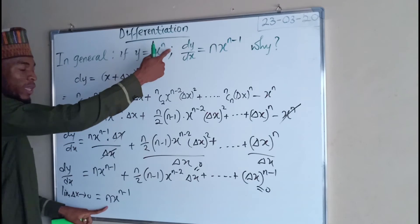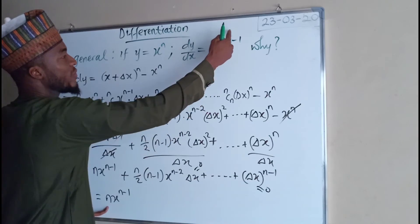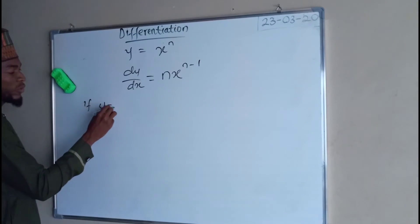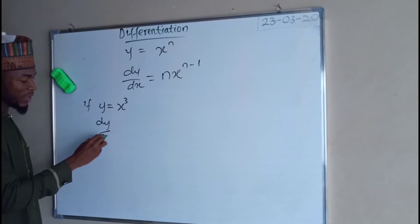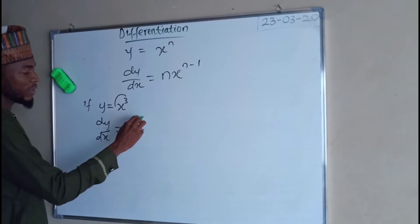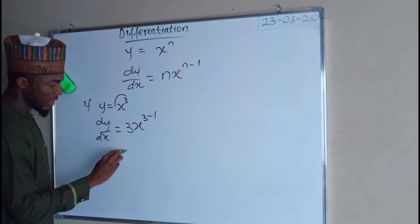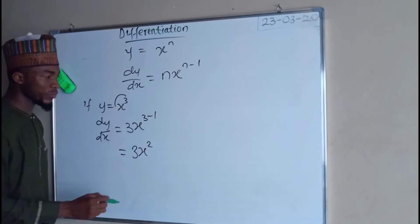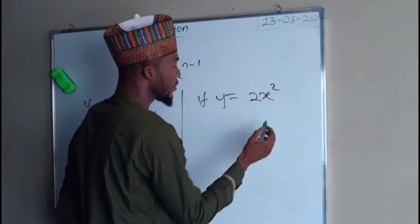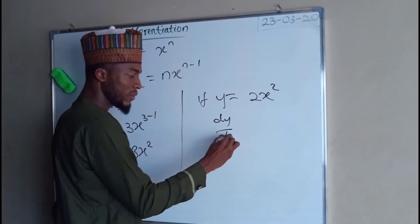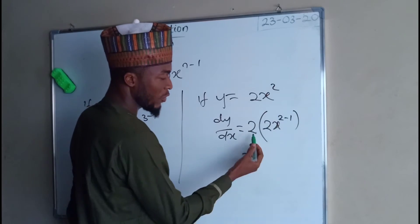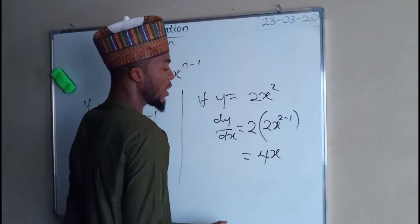Therefore, if y equals x to the power n, then dy over dx equals n times x to the power n minus 1. For example, if n equals 3, then dy over dx equals 3x squared. And if y equals 2x squared, then dy over dx equals 2 times 2 times x to the power 2 minus 1, which is 4x.